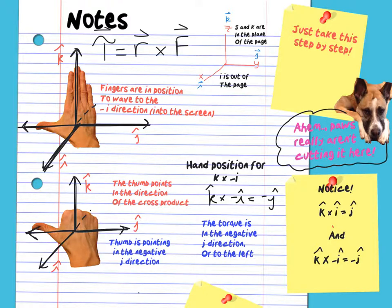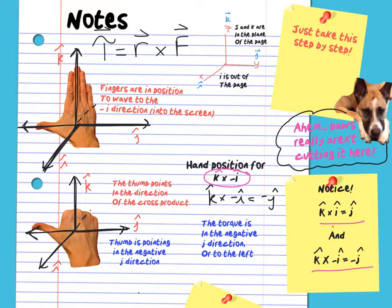Let's look at another relationship. Here we start out with K cross negative I. So what do you do? You put your fingers in the position of positive K, which means they're pointed up. You turn your wrist so that your fingers wave to the negative I direction, which means into the screen direction. So your fingers will be perpendicular to the screen — or parallel to the negative I direction, I should say. And you look and see which way your thumb is facing, and it is facing the negative J direction. So K cross I equals J and K cross negative I equals negative J. So if you do this enough, you will see different patterns.